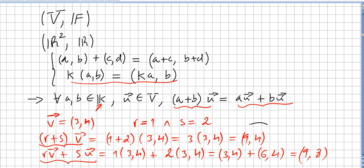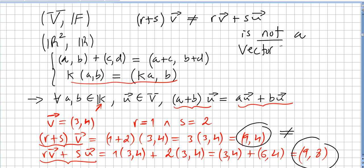So this one is not the same as this one. We see that (r+s) times V equals (9,4), which is different from rV plus sV equals (9,8). So this is not a vector space.